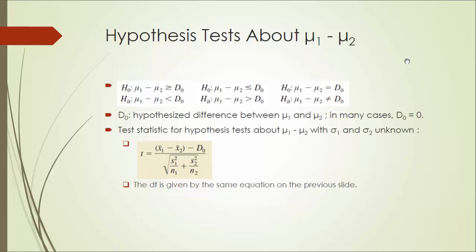To calculate the test statistic, the numerator will be the difference between two sample means minus D0, the hypothesized difference. The denominator will simply be the SE given by this formula, square root of S1 squared divided by N1 plus S2 squared divided by N2. And the degree of freedom is given by the formula on the previous slide.